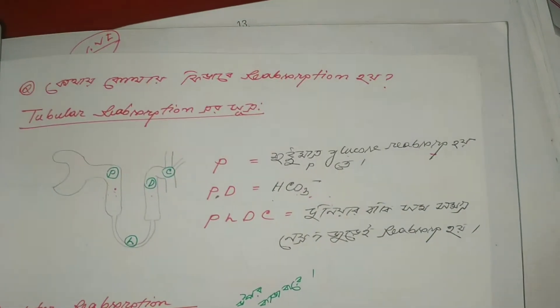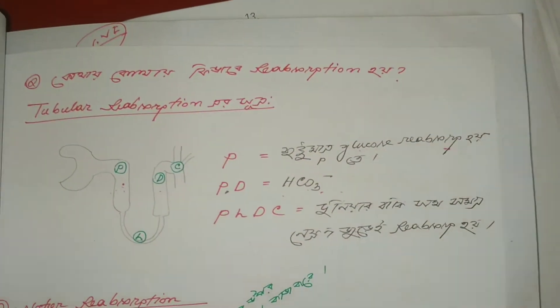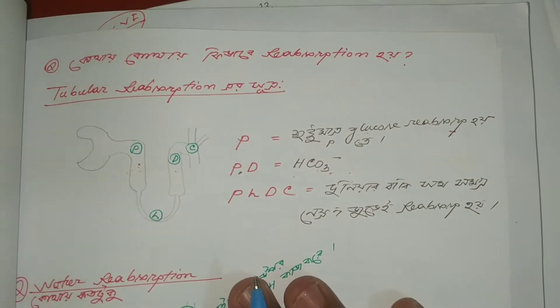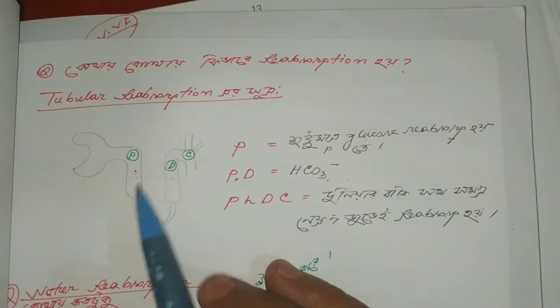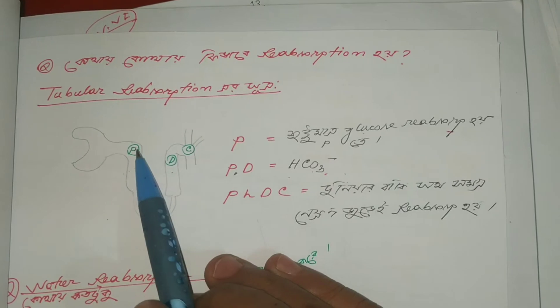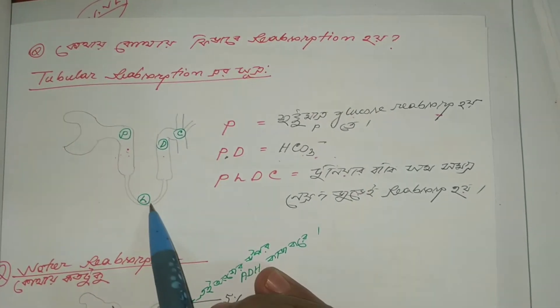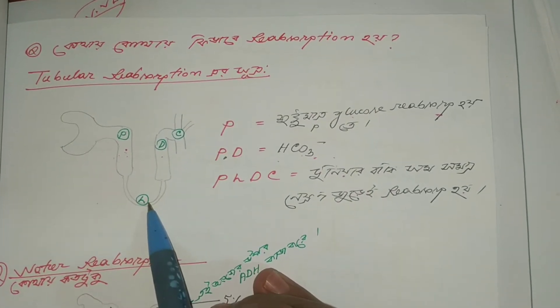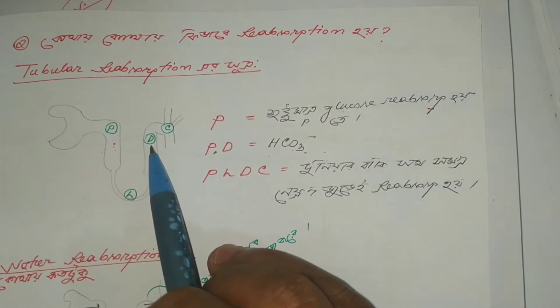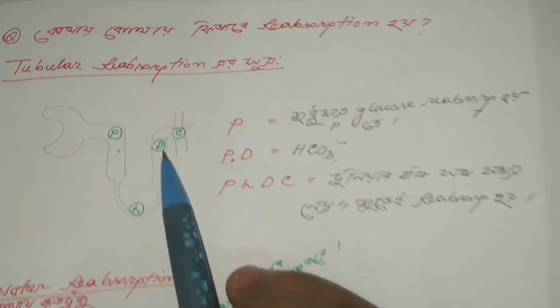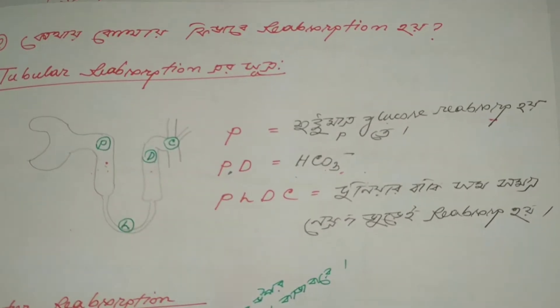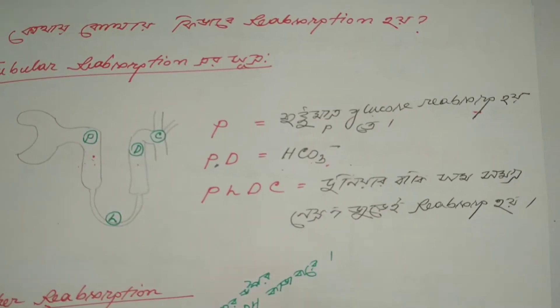So, where is which substance and how is reabsorption? P means proximal convoluted tubule, L means loop of Henle, D means distal convoluted tubule, and C is the collecting duct.